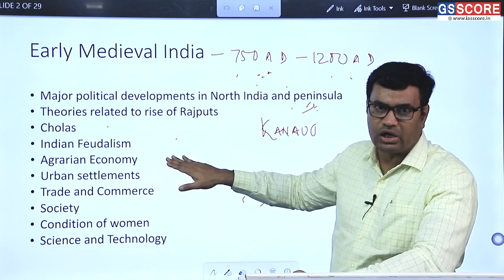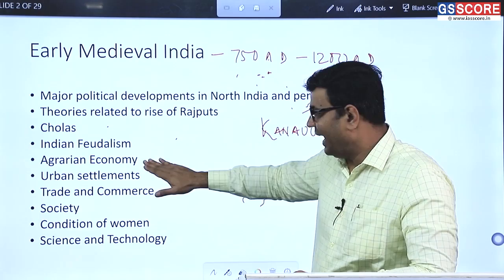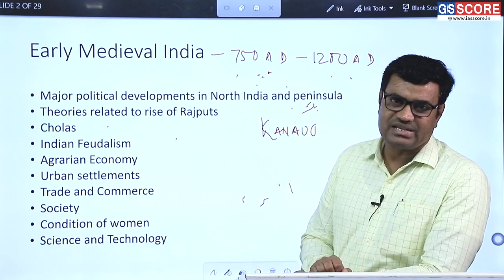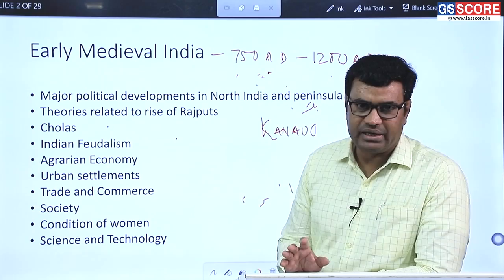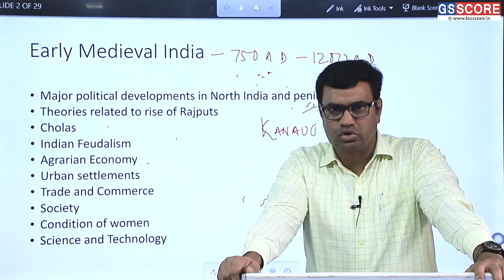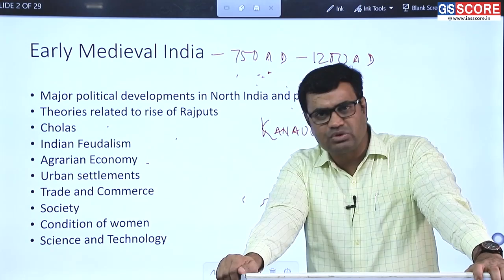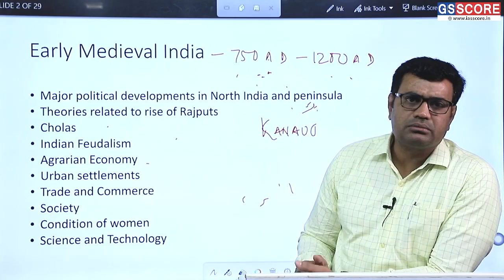A major development closely related to Indian feudalism was the agrarian economy, because feudalism did not promote long-distance internal and external trade, so the economy became inward-looking and confined to agrarian production. Urban settlements continued to decline as diverse arts and crafts could not be promoted, and trade and commerce were largely restricted to internal trade only. The Cholas were an exception — they promoted external trade with Southeast Asia and even with China through the Bay of Bengal region.